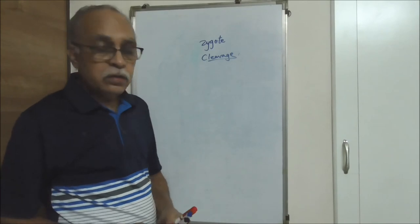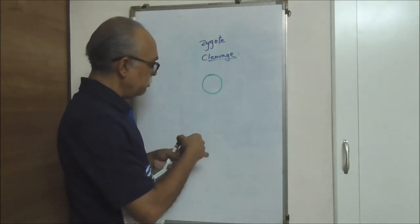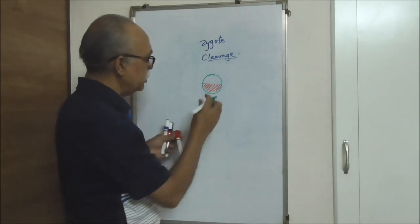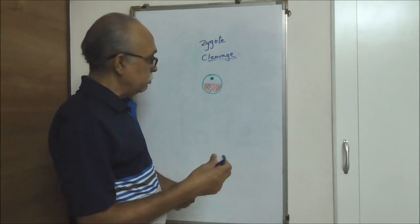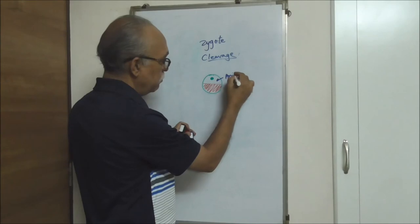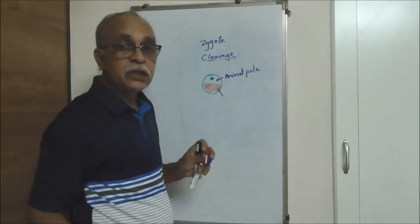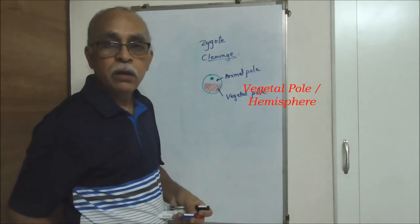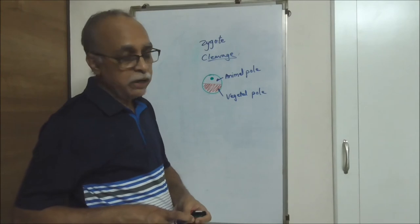Suppose this is any egg cell and it contains a large amount of yolk — the nucleus and cytoplasm are mainly contained on one side. The part of the egg cell which contains the nucleus and cytoplasm is named the animal pole or animal hemisphere, and the other half which contains predominantly yolk is called the vegetal or vegetal hemisphere. This is how a megalecithal or macrolecithal egg can be shown.